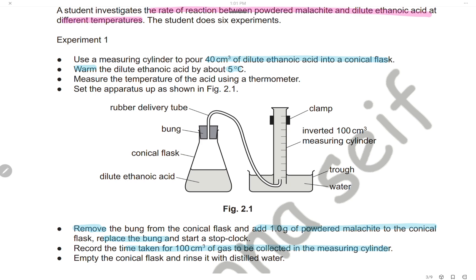In the first experiment, using a measuring cylinder, we measure 40 cm³ of ethanoic acid, place it in a conical flask, and warm it to about 5°C. Measure the temperature of the acid and set up the apparatus as shown. The carbon dioxide gas will be collected in an inverted measuring cylinder. Remove the bung from the conical flask, add 1 gram of powdered malachite, quickly replace the bung, start the stop clock, and record the time taken to collect 100 cm³ of gas.